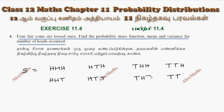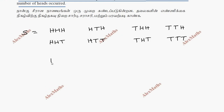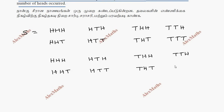For the sample space of 4 coins, we have 16 elements total. First, we work through the combinations starting with H, H, H and so on to enumerate all 16 outcomes.